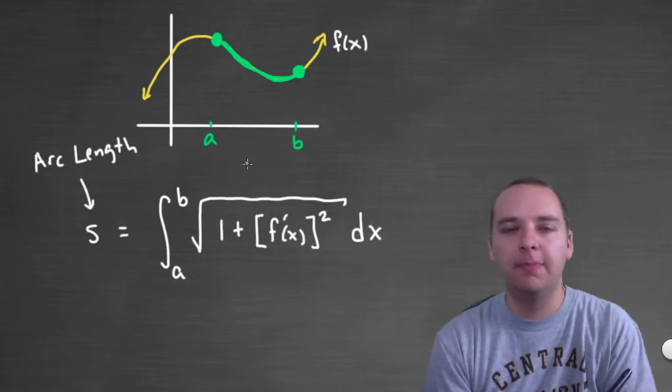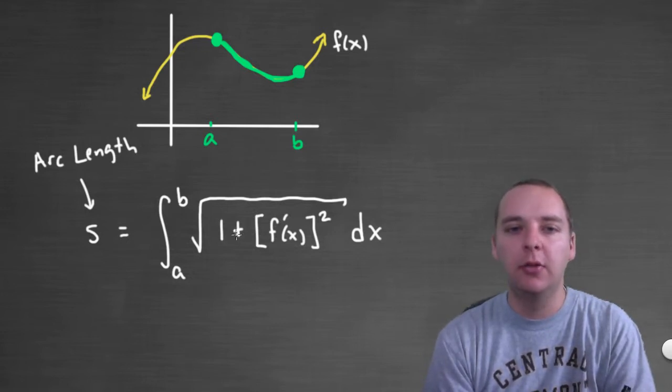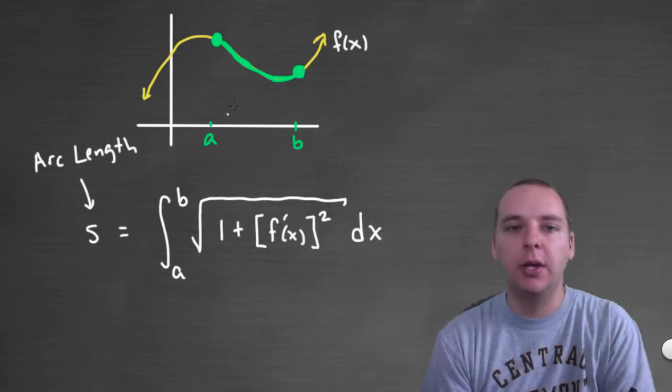This is actually coming from, if you're familiar with vectors, this is actually coming from the norm of a particular vector, the magnitude of a particular vector, but that's a little beyond the scope of this class. But in any case, this does give you the length of this curve from a starting point to an ending point.